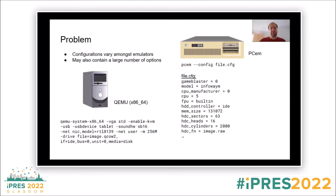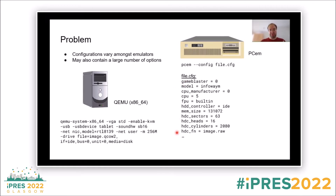This can be quite diverse. For QEMU, you can pass all configuration options — for example, if you want to use some graphics card, configure a network card, or pass a disk image for the hard disk drive — all via the command line. Whereas in some other emulator, the PCem emulator, which also like QEMU emulates an IBM PC, you pass a single command line option pointing to a configuration file in which you would have to list all of those single options.